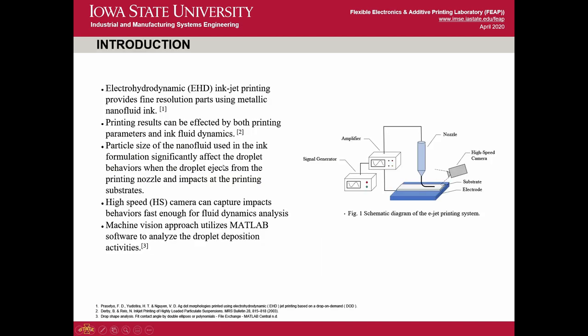For introduction, the electro-hydrodynamic inkjet printing, also called E-jet printing, provides fine resolution for parts that use metallic nano ink. Printing results can be affected by both printing parameters as well as the material properties of the ink fluid. Particle size of the nano fluid used in the ink's formulation significantly affects droplet behaviors when the droplet ejects away from the nozzle as well as when the droplet hits the substrate.